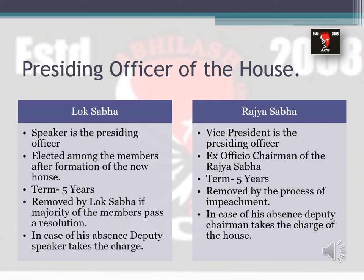The term of the Speaker in Lok Sabha is five years; in Rajya Sabha it is also five years. A Speaker is removed by a majority of votes passed by members through a resolution but continues to remain a member of Lok Sabha. The Vice President is removed through impeachment. If the Speaker is unavailable, a Deputy Speaker takes charge with all the same powers temporarily. In Rajya Sabha, a Deputy Chairman takes charge in the absence of the Vice President.